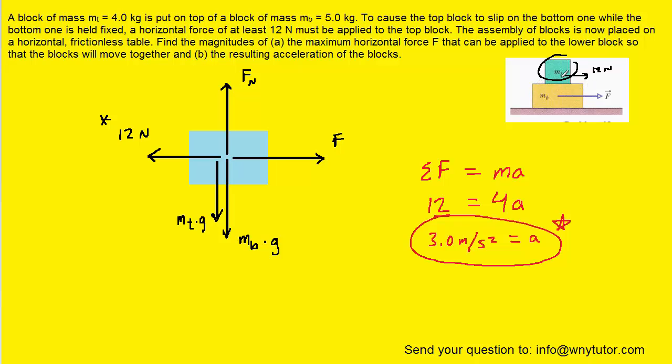Now, according to Newton's third law, if there is a contact force of 12 Newtons acting on the top block, there is an equivalent contact force acting on the bottom block, but in the opposite direction. So for the bottom block, we can say that the 12 Newtons is acting on the left side of the diagram.